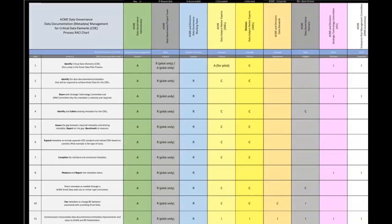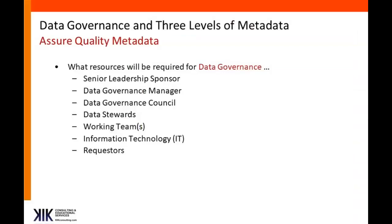Here's an example of the critical data element process. This is what another organization did as they were starting to identify what were the critical pieces of data. It's a typical RACI chart with the different colors of the different columns being associated with the different roles and responsibilities associated with your program.